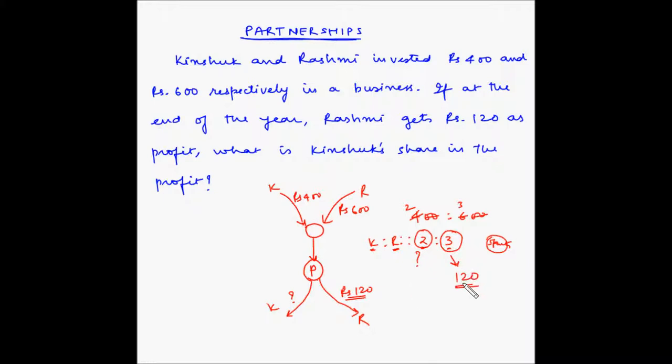So, quickly I can calculate that 3 parts is 120. So 1 part is 120 divided by 3 which is 40. And if 1 part is 40 then 2 parts is 40 multiplied by 2 which is 80. So Kinshuk gets Rs 80.